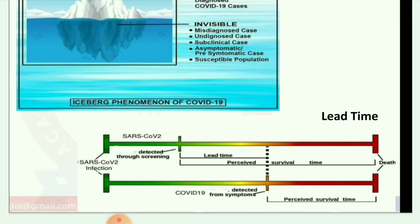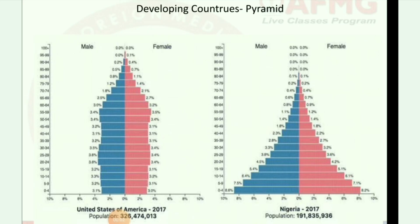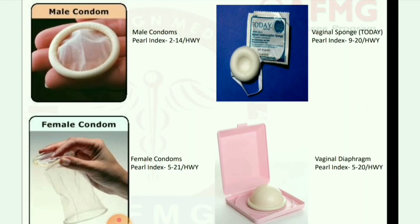Next image is light time: green, yellow, orange, and then red. Red means death. Next image is developing countries pyramid. Next image is barrier contraceptives: male condom, female condom, vaginal sponge, and vaginal diaphragm.